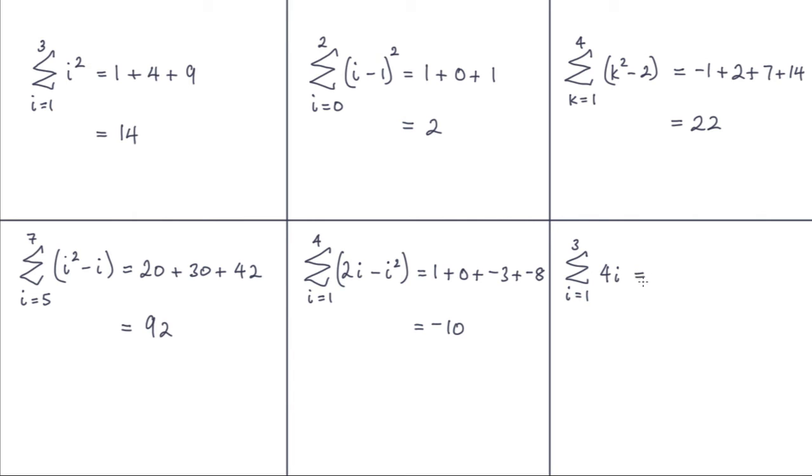And onto this final example here. We've got 4I. I being 1 to start off with. So 4 times 1 is 4. Popping 2 into here. 4 times 2 is 8. Final one will be 3. 4 times 3 is 12. Final answer on this one is 24.